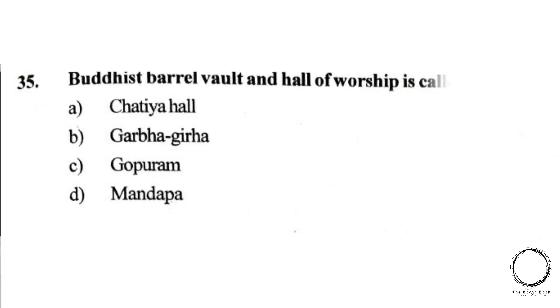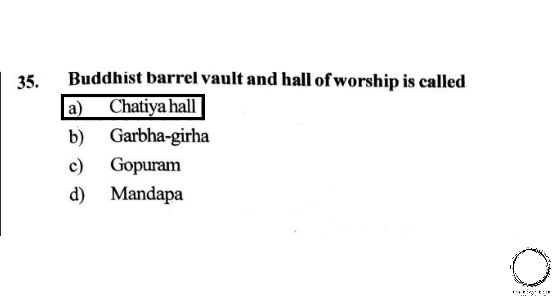Moving on: a Buddhist barrel vault hall of worship is called: A) Chaitya Hall, B) Garbhagriha, C) Gopuram, D) Mandapa. The right answer is A, Chaitya Hall.